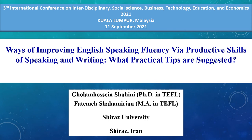This presentation is about ways of improving English-speaking fluency via productive skills of speaking and writing. It is actually complementary to our previous presentation, which tapped on the role of input in developing oral fluency. In this study, we have therefore decided to focus on the role of output, especially writing and speaking, in developing oral fluency.